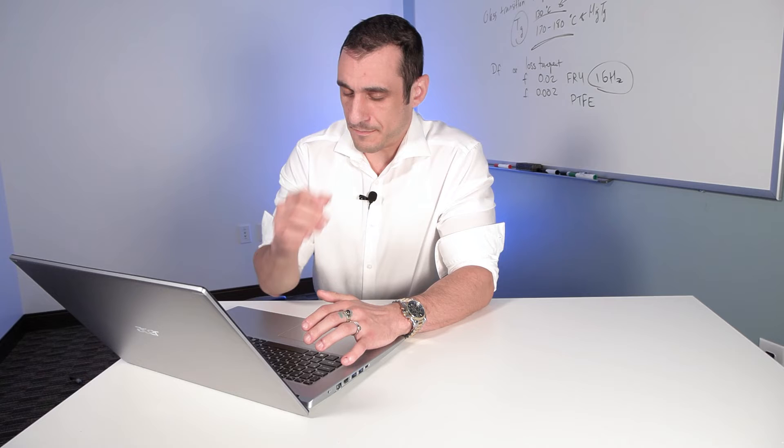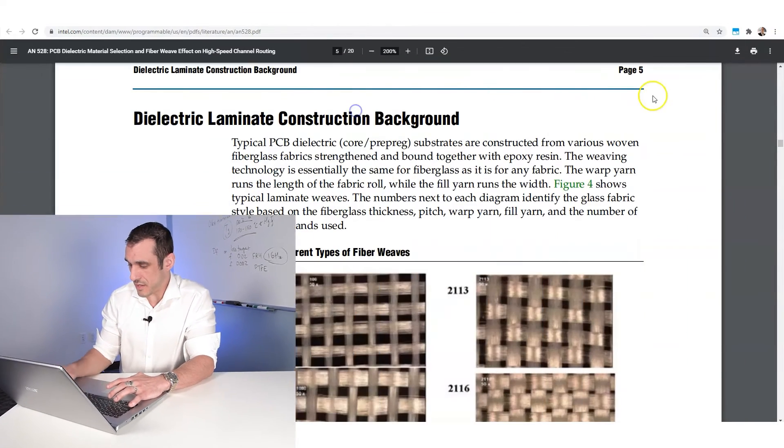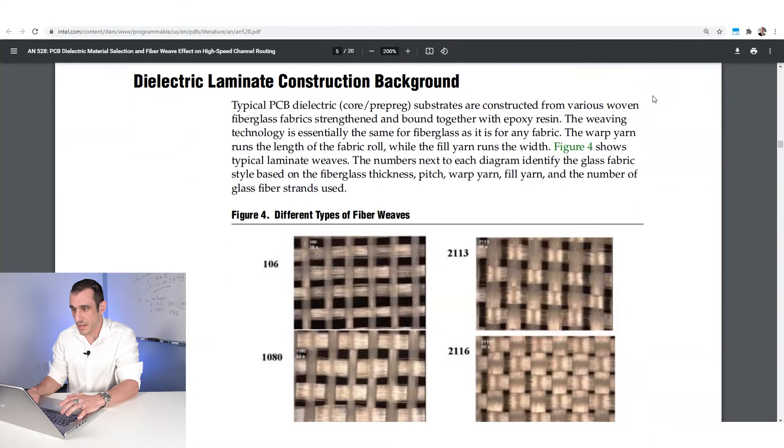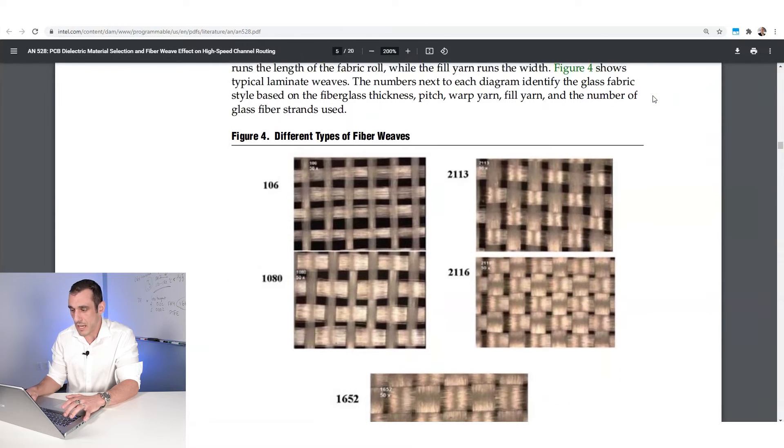Okay. So what we want to look at now is some examples of what an actual PCB substrate looks like microscopically. And what I'm going to do is show an image from a certain application note that's probably well known. You've probably seen it in search results. And then I'm going to show an actual data sheet to show you exactly what it looks like and where to find the important information and some of the other information that's in the data sheet. So first, I'm looking at this application note from Intel. This is a pretty popular application note.